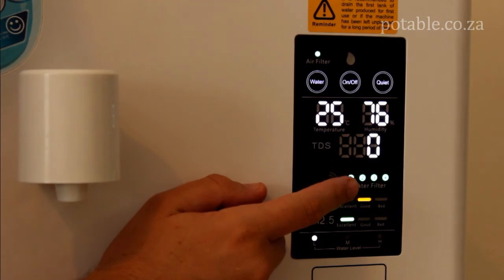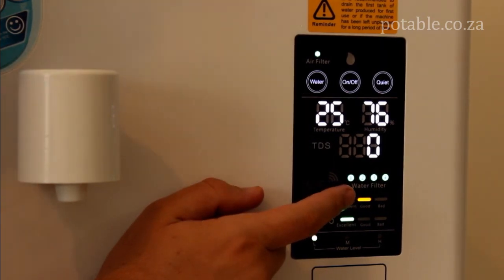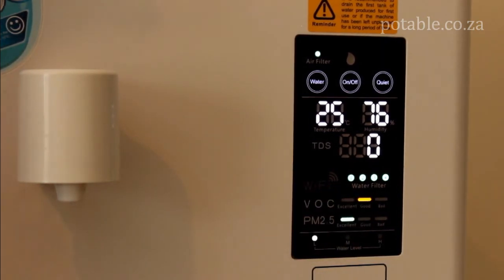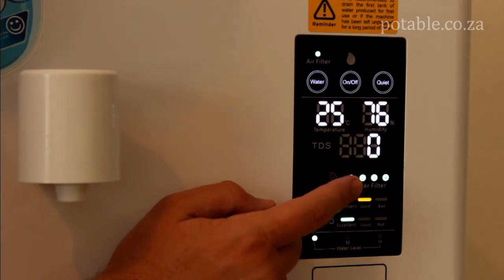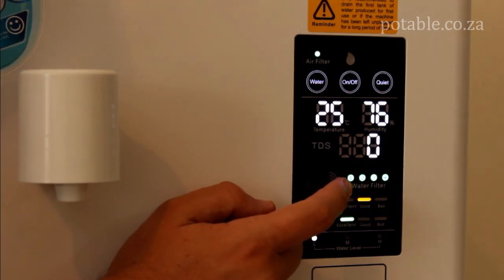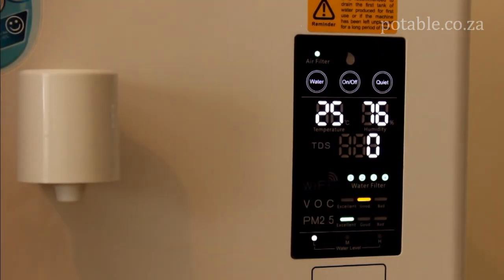Over here you can see lights for the water filters. These correspond with the four water filters below. Now if the lights go red it simply means you need to change the water filter.